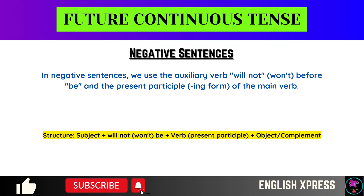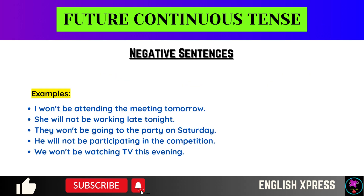In negative sentences, we use the auxiliary verb 'will not' (won't) before 'be' and the present participle ing form of the main verb. Examples: I won't be attending the meeting tomorrow. She will not be working late tonight. They won't be going to the party on Saturday. He will not be participating in the competition. We won't be watching TV this evening.